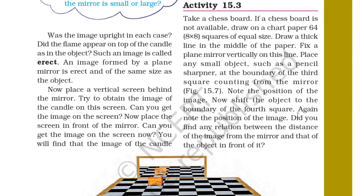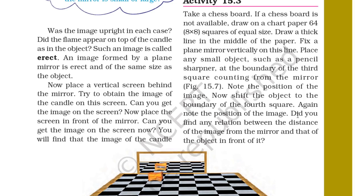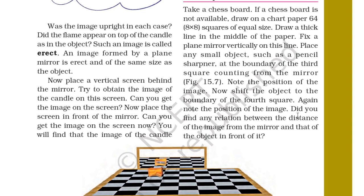Let us perform Activity 15.3. Take a chess board, or draw 64 squares of equal size on chart paper. Draw a thick line in the middle of the paper and fix a plain mirror vertically on this line. Place a small object such as a pencil sharpener at the boundary of the third square counting from the mirror. Note the position of the image.